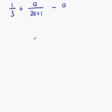What we'll do first of all, to make things simple, is just consider these two fractions adding together to begin with. The minus a at the end we'll worry about in a moment. So what we have here is 1/3 plus a over 2a plus 1.